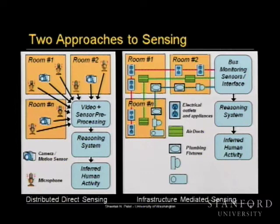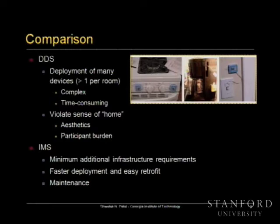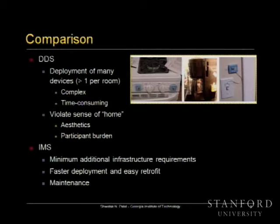Comparing the two approaches: the challenge with distributed direct sensing is that you typically need one or more sensors per room, and the number of installation points greatly affects eventual adoption. These sensors aren't aesthetically pleasing and create many failure points. Infrastructure mediated sensing gives you the opportunity to retrofit much more quickly — with just a handful of sensors, potentially just one, you can get the same kind of sensing you'd get with a distributed sensor network. The research question is: can we leverage this already-ubiquitous infrastructure to give you the same information a distributed sensor network would provide?